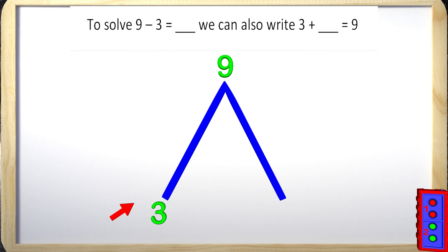So we start at 3 and count 4, 5, 6, 7, 8, 9. How many numbers did we count? The answer is 6. 3 plus 6 equals 9. Great job!